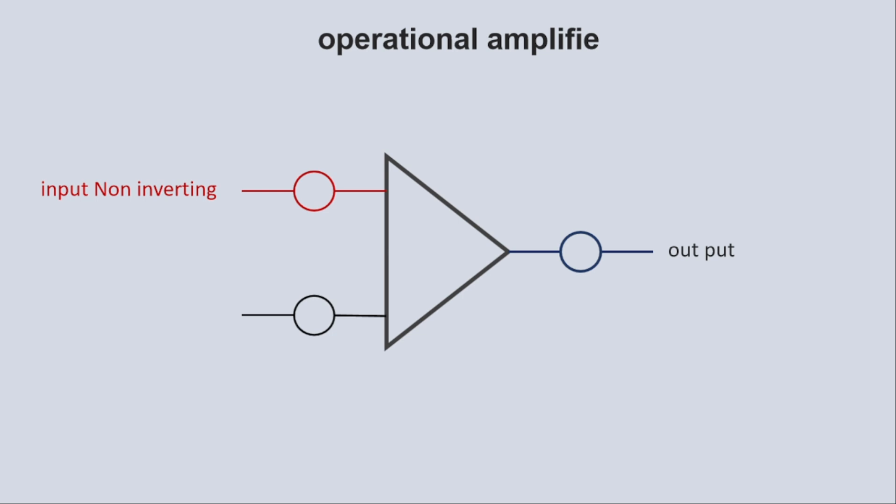Input V1, where there is a positive sign, is the non-inverting pin. The signal will be input to the non-inverting pin. The V2 pin is the negative inverting pin, where there is a minus sign.